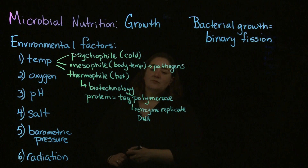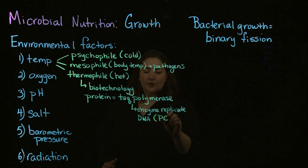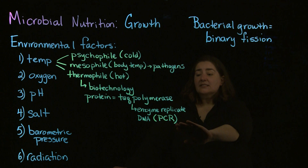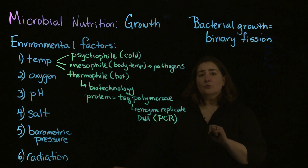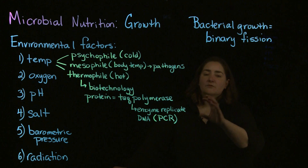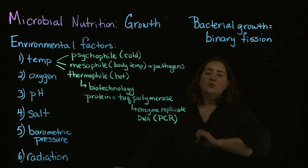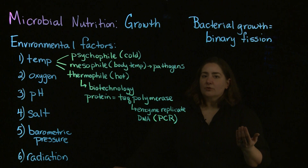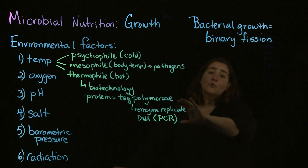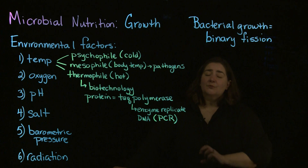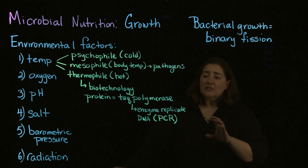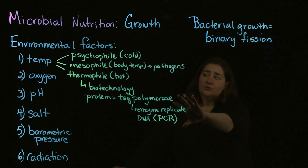One thermophile worth highlighting is a protein called Taq polymerase, which has been used in various biotechnology applications. Taq polymerase is essentially an enzyme that will replicate DNA. If you've heard about PCR — polymerase chain reaction — that's a type of biotechnology used to amplify very small pieces of DNA. It can be used at crime scenes: if there's a small amount of blood, they can use Taq polymerase to amplify that DNA in the small sample to determine who the criminal was. It's also commonly used in research labs when you need to replicate DNA.